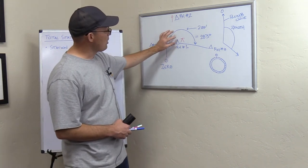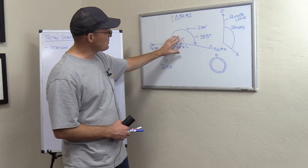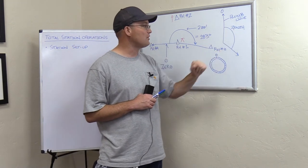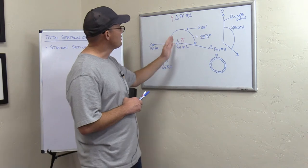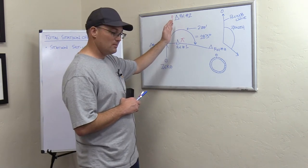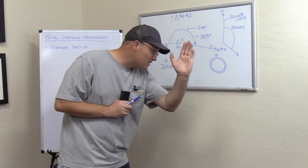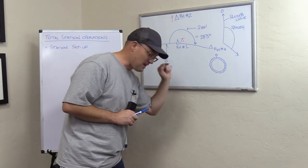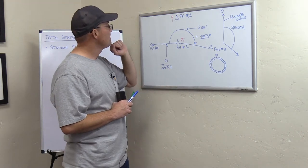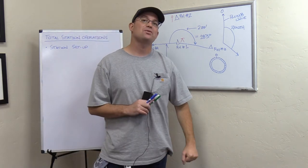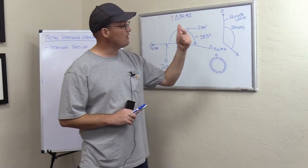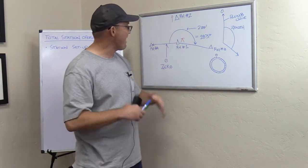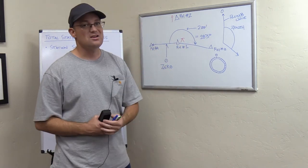If we've physically cited the prism at RH2 and set zero, but we put RH4 in the data collector, it's going to corrupt our measurements. So you need to have your setup point correct, your backsight point correct, physically cite the correct point, and remember to set your zero on your instrument. Once you've set up at RH1 with your total station and leveled it, you've established your plumb line for your vertical angles. Cite your next control point, get the crosshairs on the center of the prism, set zero in your station setup — now you're ready to turn angles and distances: horizontal angles, vertical angles, and slope distances to all the other points in your survey. That is a station setup.